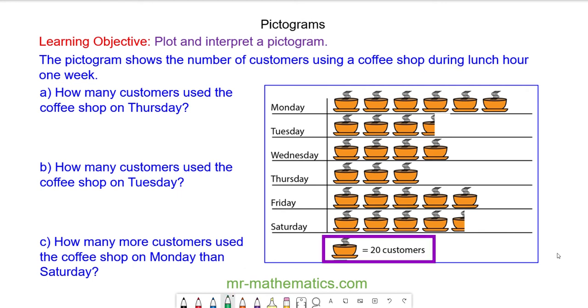Our key tells us that one picture represents 20 customers. On Thursday you can see we have three lots of 20, so we have 60 customers.